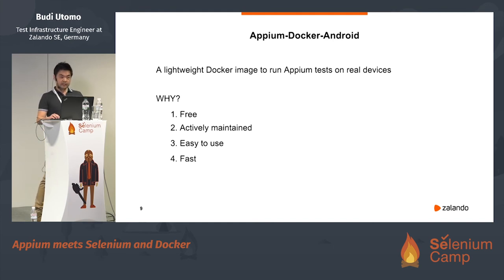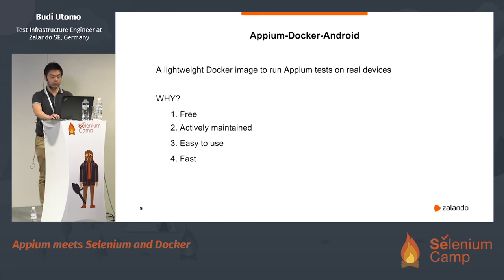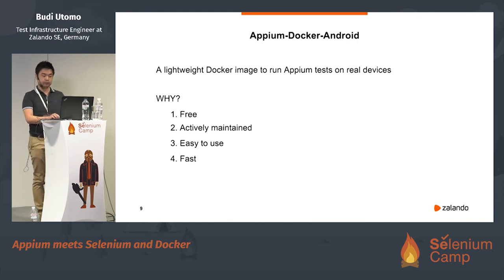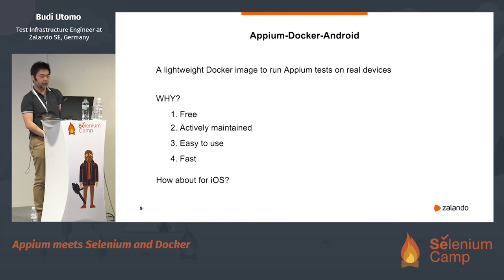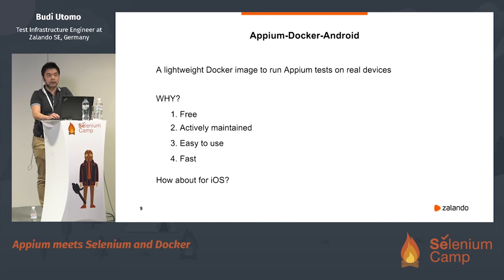It's also fast. Because the application is based on Docker and the Docker image is lightweight, it's pretty fast — if you run it, it will take only a few seconds, like five seconds, and you will have the whole infrastructure. I'm talking about Android, but how about iOS? Appium for iOS requires Xcode and Carthage, which need to be installed on a Mac. That's why right now we do not support it, but maybe in the future — let's see.